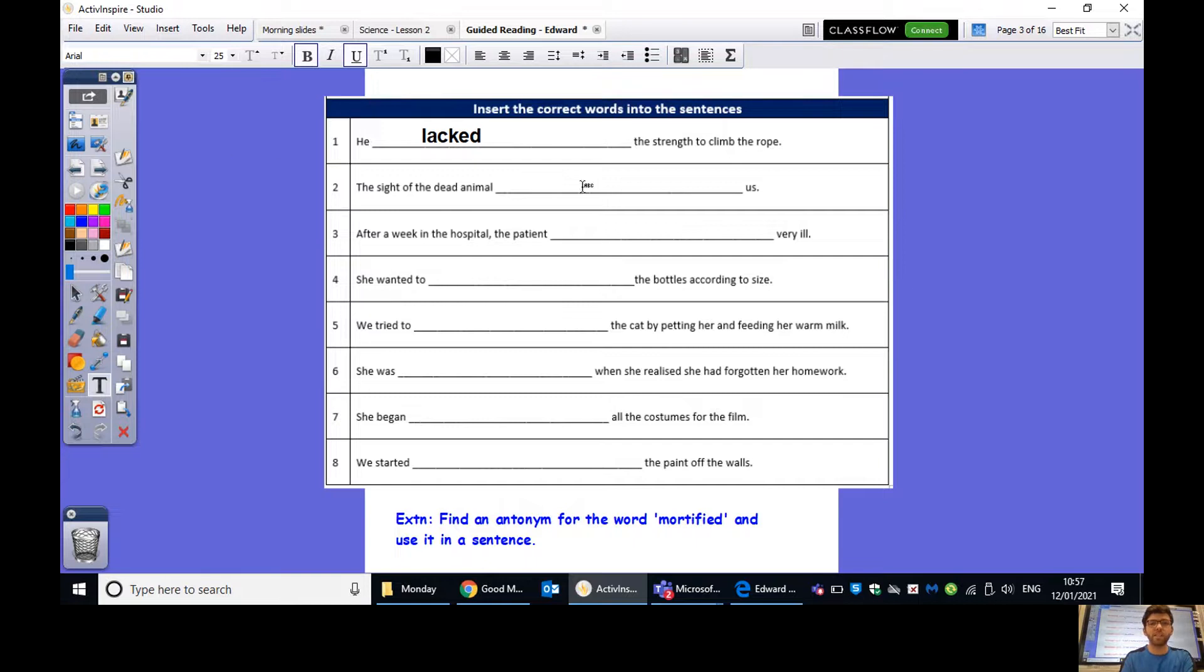So what I'd like you to do is to pause the video here. Can you then use those eight bits of vocabulary that we've learned and put them in the right places in these sentences? If you want to push yourself, it would be great as an extension, find an antonym for the word mortified and use it in a sentence. So remember, what does mortified mean? Hands over the face. So mortified means really embarrassed. And what's an antonym again? Remember, synonym means a word that is the same and antonym is something that means the opposite. So think of a word that means the opposite of mortified and use it in a sentence. That is your task. Pause the video now and resume when you're ready to continue.